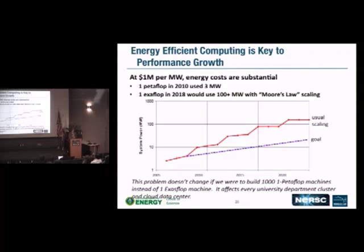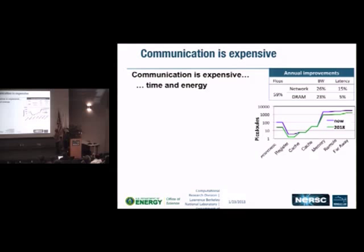The canonical exascale slide says the main problem in getting to exascale is about power — how to build a machine you can afford to turn on. If you just look at Moore's Law scaling, you'd have about 200 million dollars in power costs just to pay the power bill at NERSC. For those writing codes and worrying about next-generation architectures, the first problem is that communication is very expensive — expensive both in time and in energy.